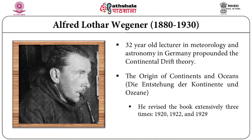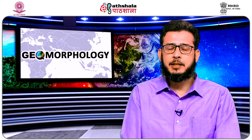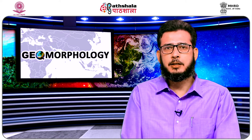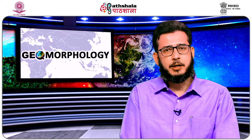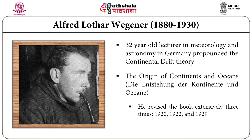It was Alfred Lothar Wegener in the year 1912 — a 32-year-old lecturer in meteorology and astronomy in Germany — who propounded the continental drift theory with sound evidence. He delivered a lecture on the formation of the major features of the earth's crust at Frankfurt in the Geological Association. He suggested that continents had once been combined in the form of an original single sialic landmass and had afterward broken apart and drifted to their present positions. Later in 1915, he published his theory as The Origin of Continents and Oceans.